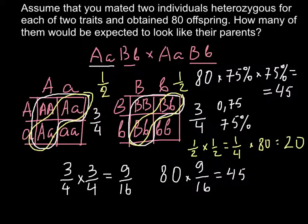So if the question would be how many of the offspring of the F1 generation would have the same genotype, the answer would be 20. And if the question is how many out of 80 plants of the progeny would look the same or would have the same phenotype, the answer would be 45.